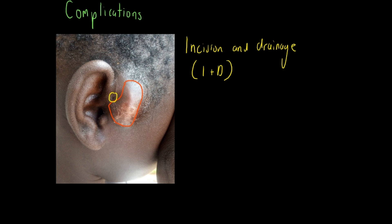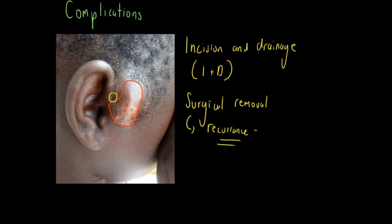Incision and drainage is where, under sterile conditions, an incision is made around the cyst and the pus is drained. For long-term management of a preauricular sinus, you should consider surgical removal, typically done by an ENT surgeon, where the sinus and the tract of the sinus will be removed. However, there is a risk of recurrence, as you can see in this photo, where some of the tract may remain and a cyst may form.